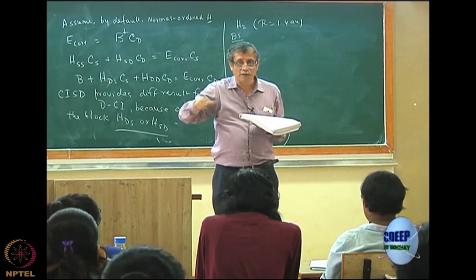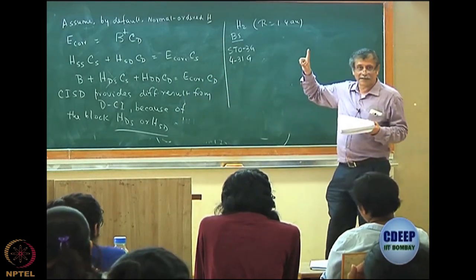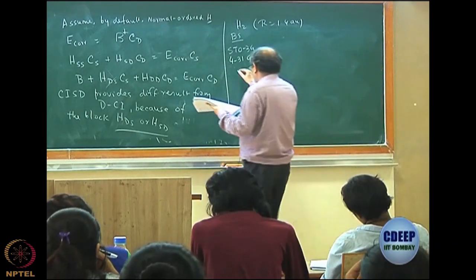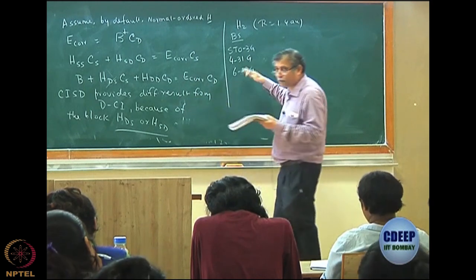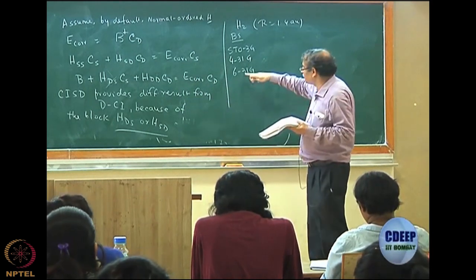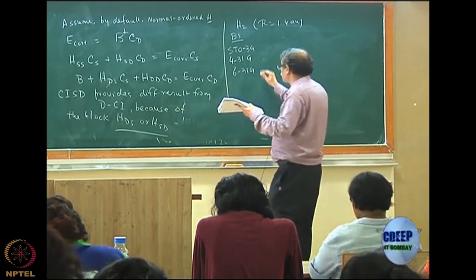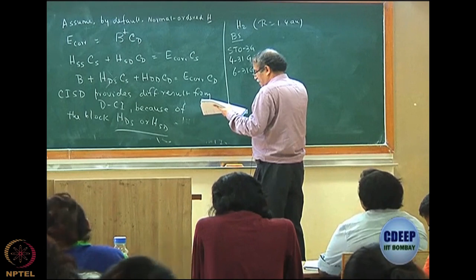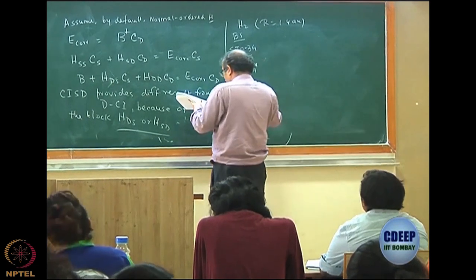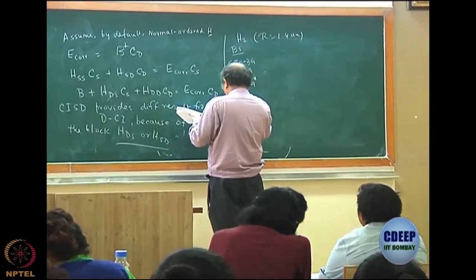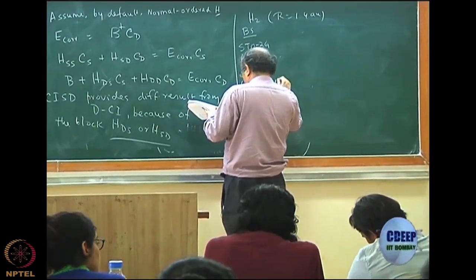The number of contracted Gaussians depends on how many entries there are. 4-31G and 6-31G give the same number of contracted bases, except that the core is better described in 6-31G. We also have 6-31G* and a very large basis: 10S, 5P, 1D — and then the exact result.